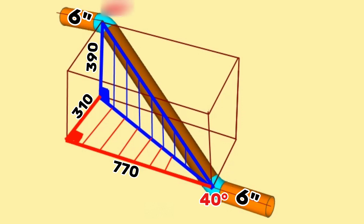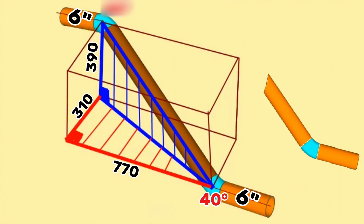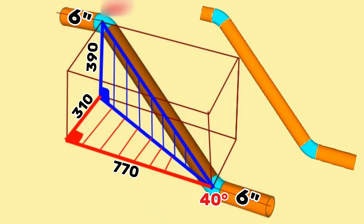We will explain with examples how to calculate the length of the brown color pipe piece and center-to-end dimensions of the 40 degree cut elbows in this 6 inch pipeline. As you can see, the 6 inch pipeline comes first horizontal, then vertical up with a 40 degree elbow, and then continues horizontally with a 40 degree elbow again.